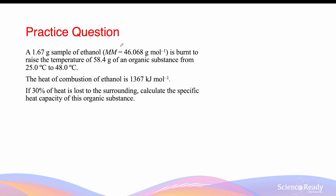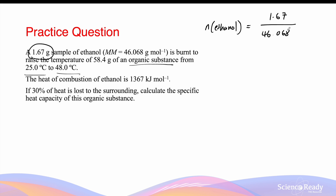A 1.67 gram sample of ethanol with a molar mass provided is burnt to raise the temperature of 58.4 grams of an organic substance from 25 degrees Celsius to 48 degrees Celsius. It is important to notice how in this particular scenario, the combustion of ethanol is not used to heat water, but rather an organic substance whose specific heat capacity will be different to that of water. The heat of combustion of ethanol is 1367 kilojoules per mole. If 30% of the heat is lost to the surrounding, calculate the specific heat capacity of this organic substance. For this particular question, we are already given the mass of ethanol used in combustion, so we can use this information to calculate the total amount of energy produced from combustion. The moles of ethanol is given by the mass, 1.67 grams, divided by its molar mass of 46.068 grams per mole. This gives 0.0363 moles of ethanol.